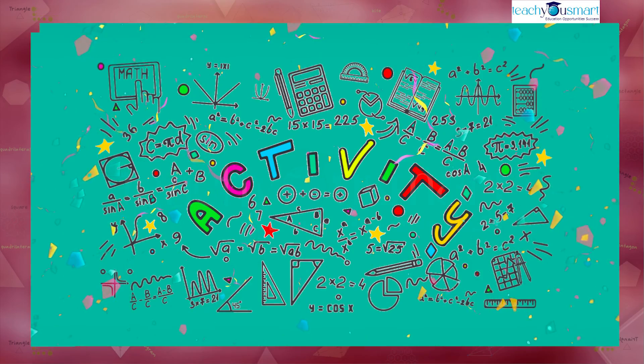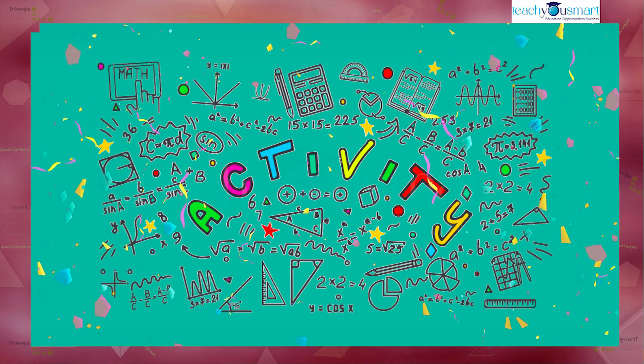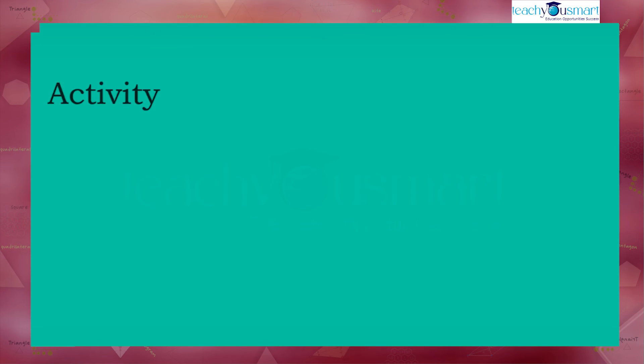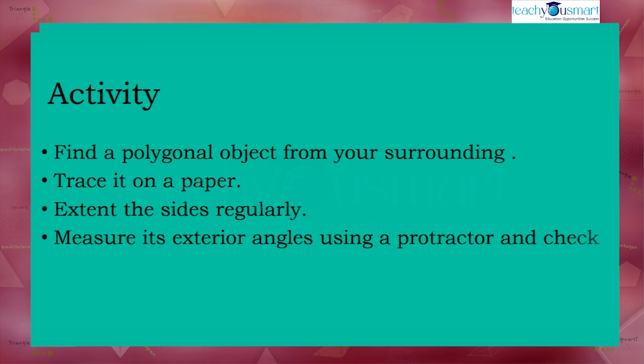Before we leave, let's do an activity. Find a polygonal object from your surroundings, trace it on paper, extend the sides regularly, measure its exterior angles using a protractor, and check whether the sum of the exterior angles is 360 degrees or not.